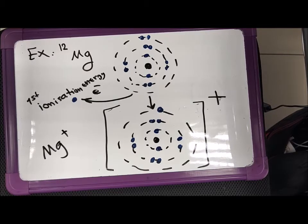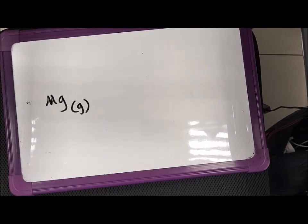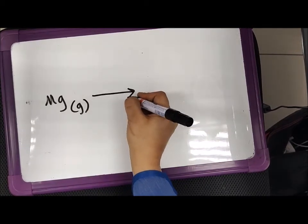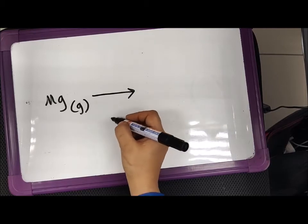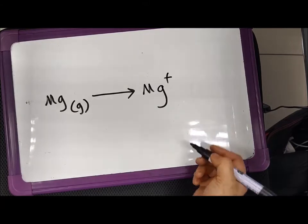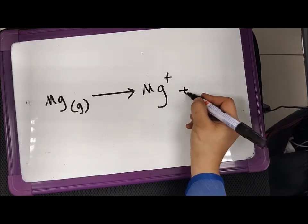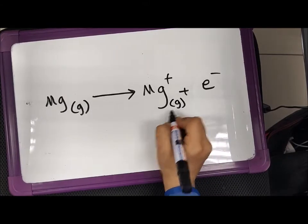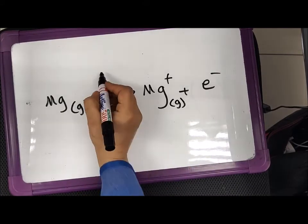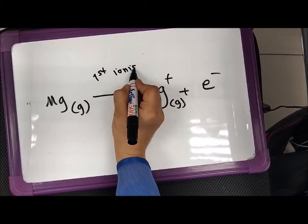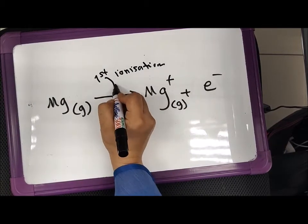How can I represent this as an equation? Mg should be in the gaseous state, and then it changes during the first ionization energy into magnesium 1+, plus one electron which is lost during this ionization. This one also should be in the gaseous state. This is the first ionization energy that we put in.